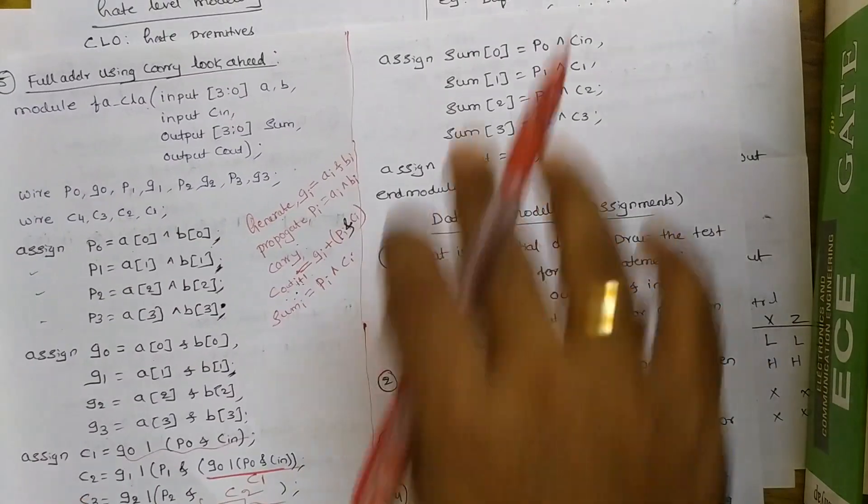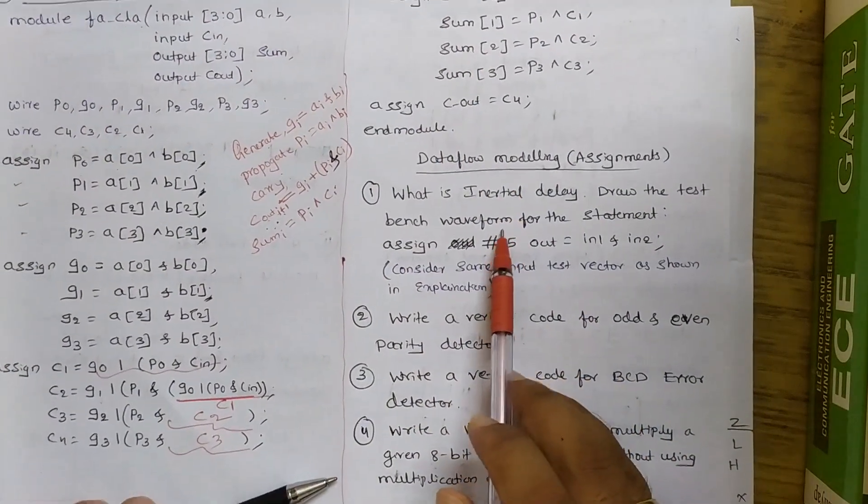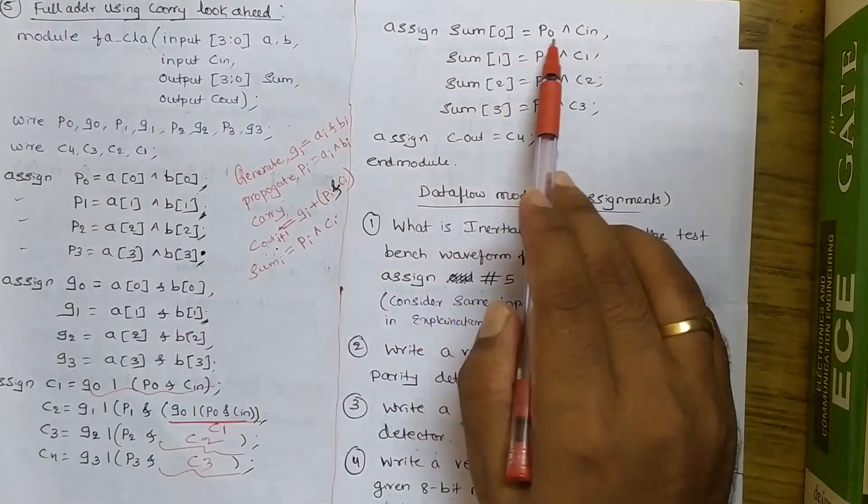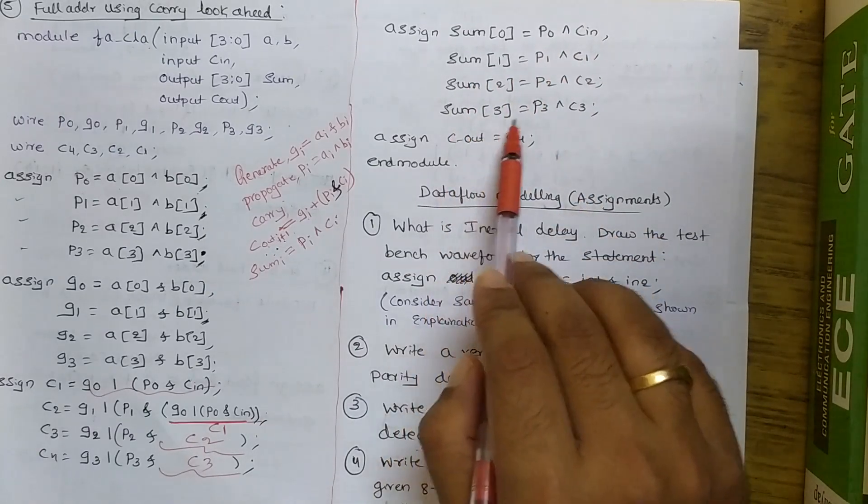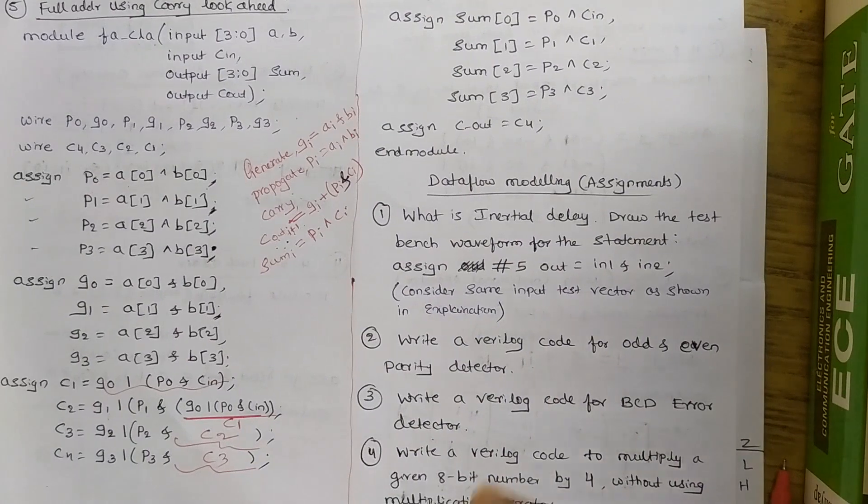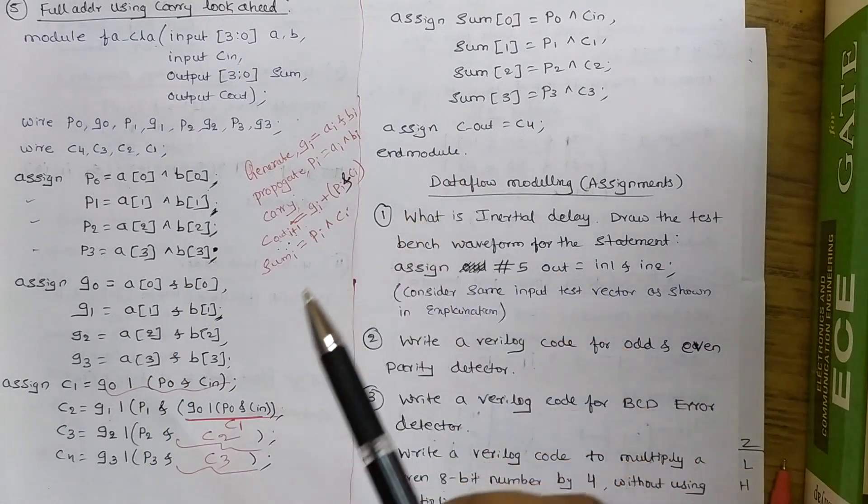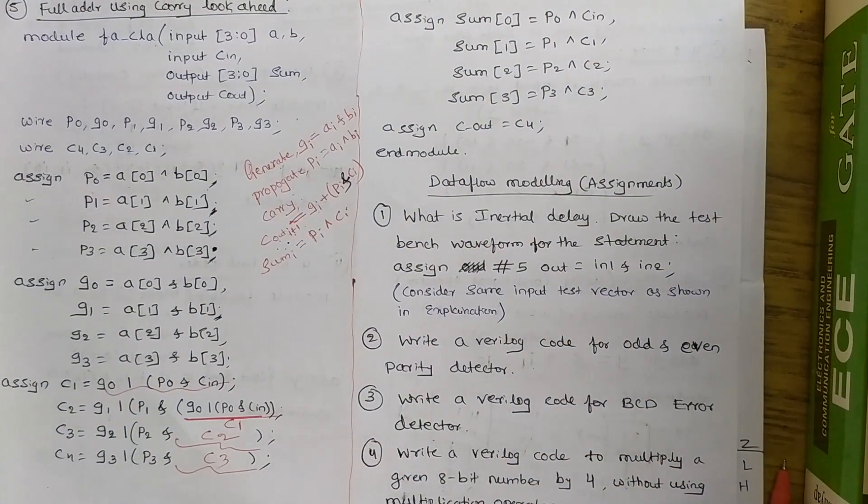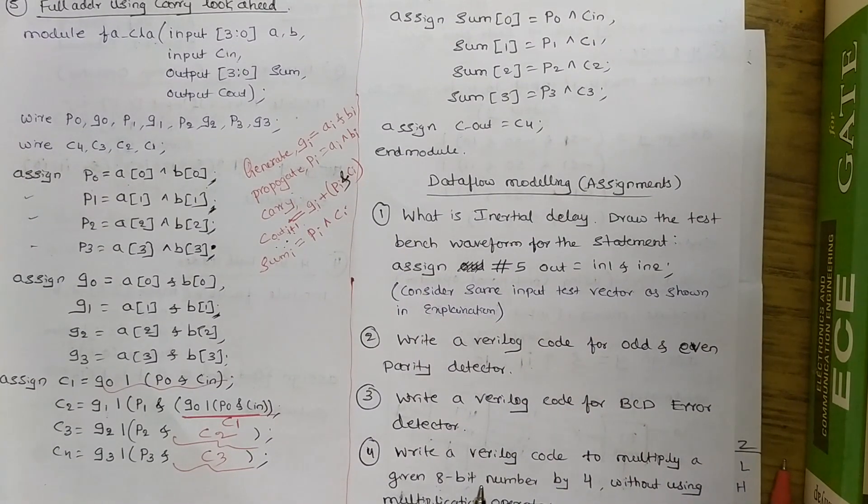Now it's time to write the last part that is sum expression. Assign sum 0 is equal to P0 XOR with Cin. Sum 1 P1 XOR with C1. Like that sum 3, P3 XOR with C3. So this is your carry lookahead adder. And finally C4 is assigned to CO because CO is referred as output of the full adder, carry lookahead full adder. This is a code for carry lookahead full adder. You can test it using any of the EDA tools. Normally we use Xilinx tool for this. So these are certain examples that I just took for explanation.